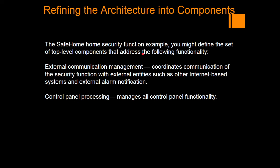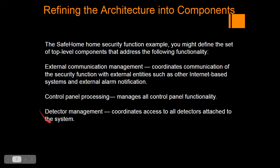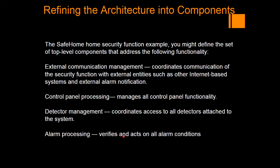Everything is explained with the example of the home safety system. Next is control panel processing — this manages all the control panel functionalities. Next is detector management — this coordinates the access to all detectors attached to the system. The detectors and sensors send images or signals as an alarm to the home safety system. Next is alarm processing — it verifies and acts on all alarm conditions. There is a threshold value: if it exceeds that level, the alarm sounds, either loud or low based upon the alarm level.